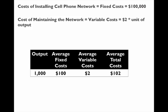Now, if a company like AT&T produces something like 1,000 units of output, then the average fixed cost — the cost per unit of the fixed input — will be $100. That's $100,000 divided by 1,000. The average variable cost, on the other hand, will be 2 times 1,000 divided by 1,000, which is $2. When you add these two things, you get the average total cost.